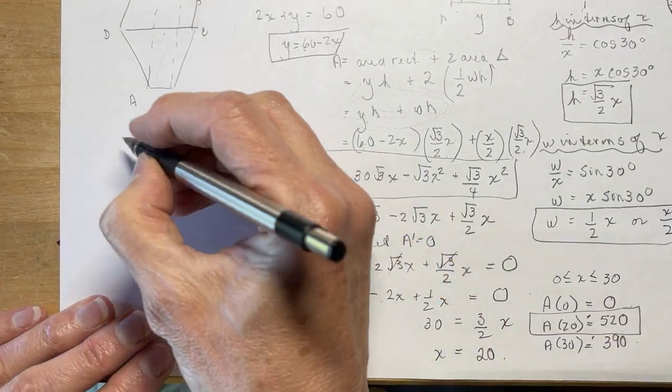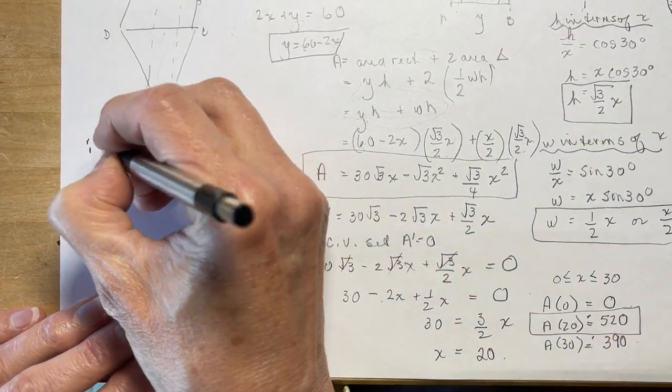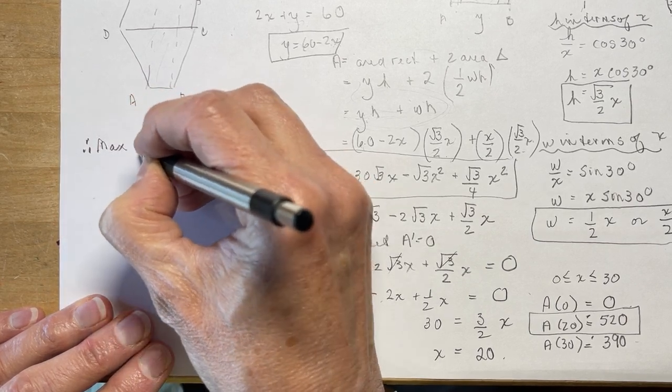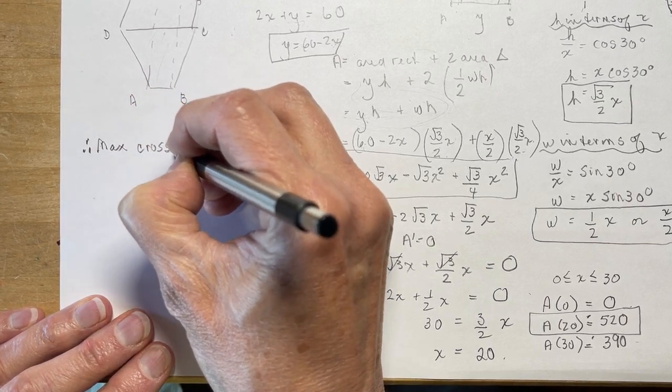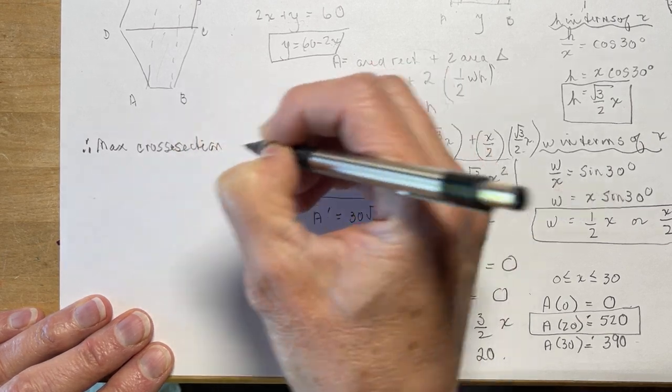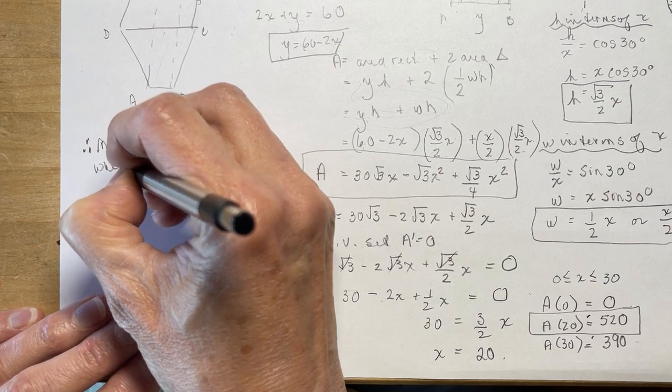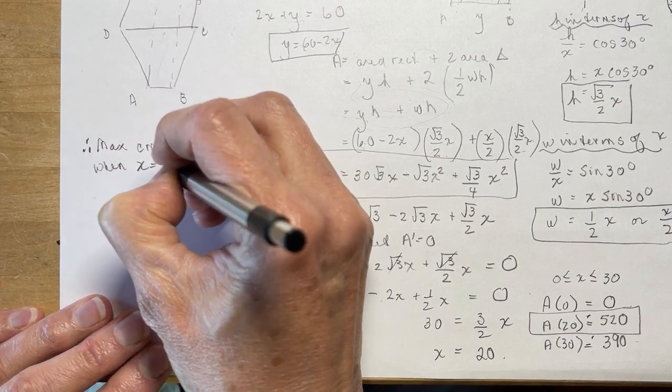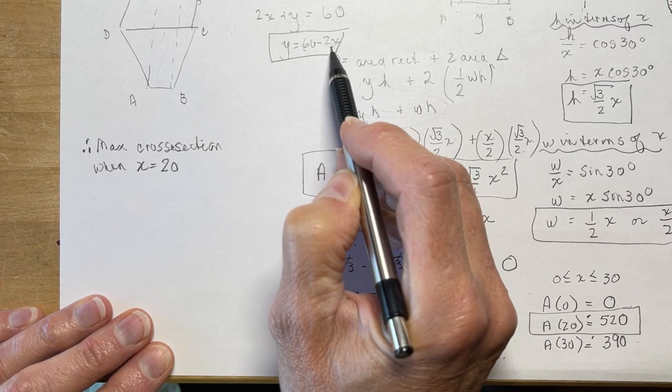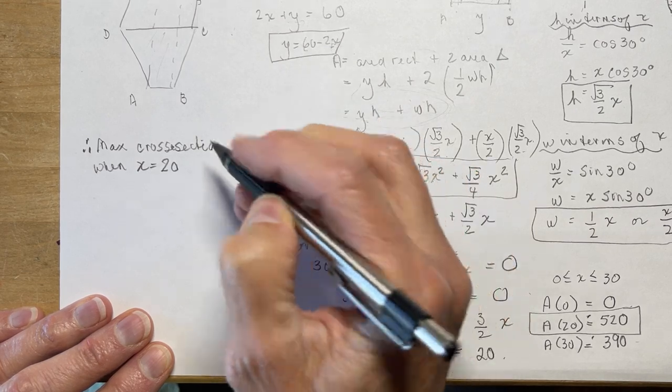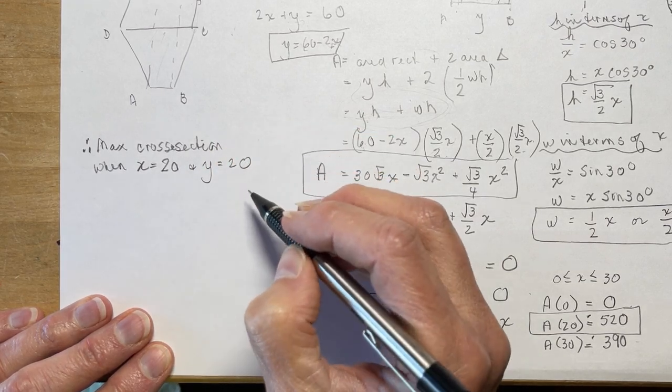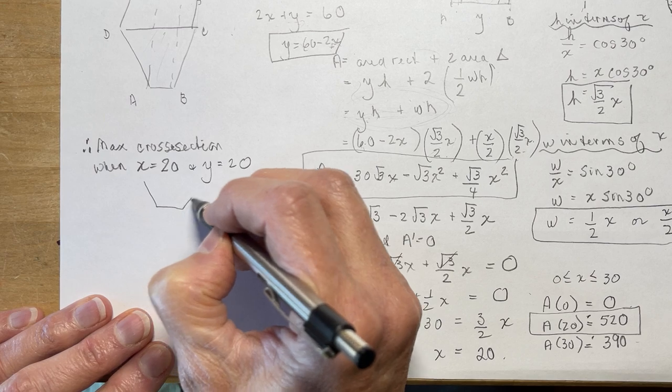So I'm going to write over here, therefore maximum cross section when x is equal to 20. Now again, remember if x is 20, I plug it back in here to find y: 60 minus 40, I get 20 as well. So y equals 20. So 20 by 20 by 20.